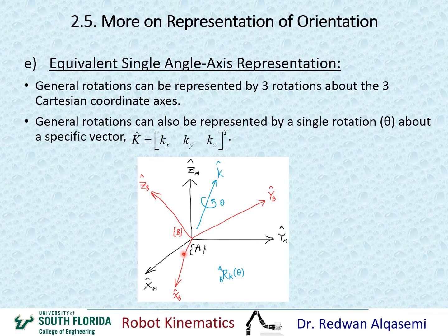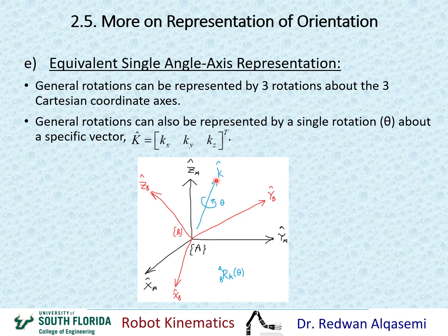If we look at this graph, we have frame A in black — X, Y, Z — and frame B in red — X, Y, Z. We can see that we can produce a general rotation of frame B relative to frame A using rotation about X, then Y, then Z. But we can also do a rotation about this new vector K, performing a single rotation by the amount of theta about K, which produces the exact same rotation of frame B relative to frame A.